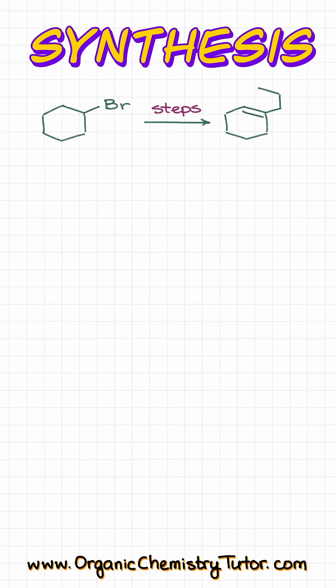Here is a fun looking synthesis. We start with this bromocyclohexane and we are going to be adding a new carbon-carbon bond and also creating a double bond over here in the ring. So how would we do that?